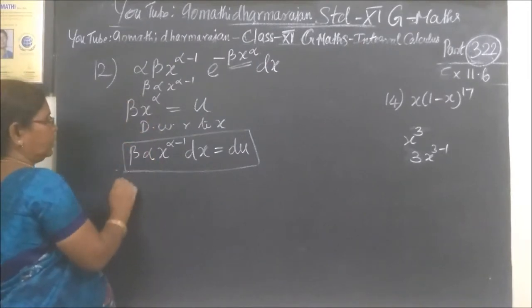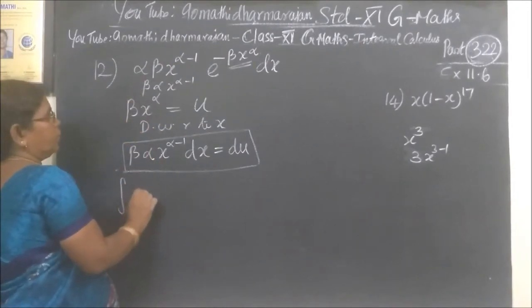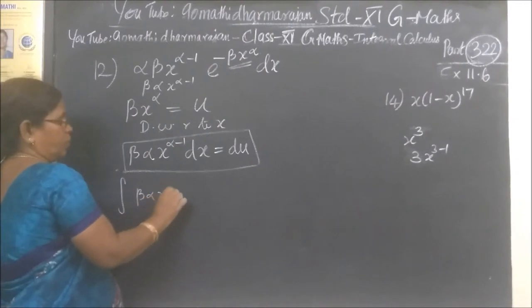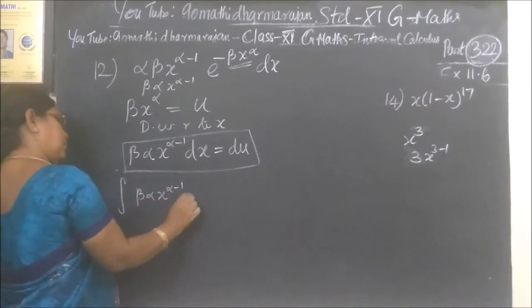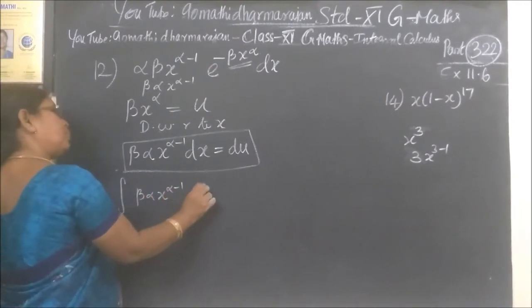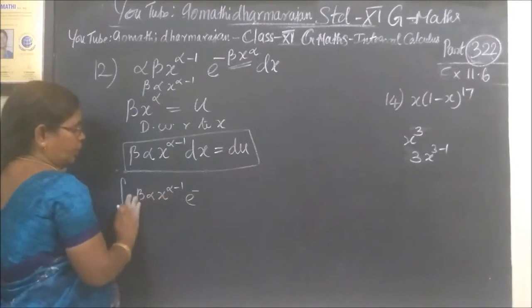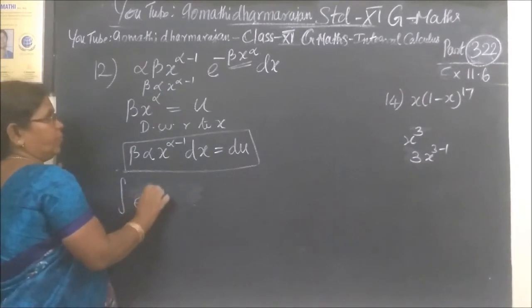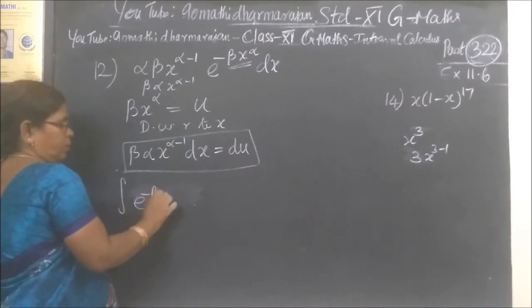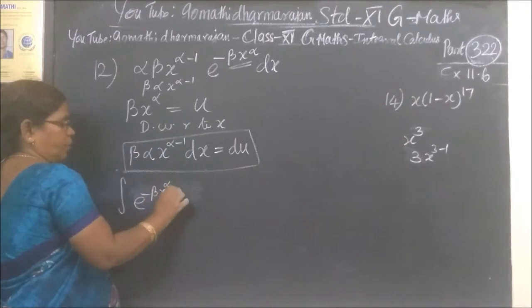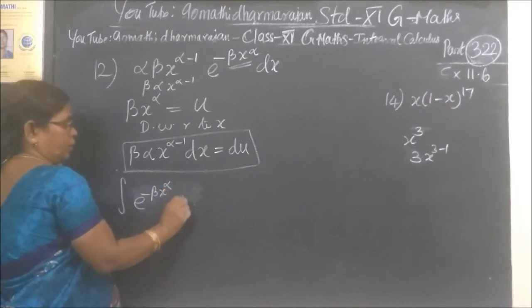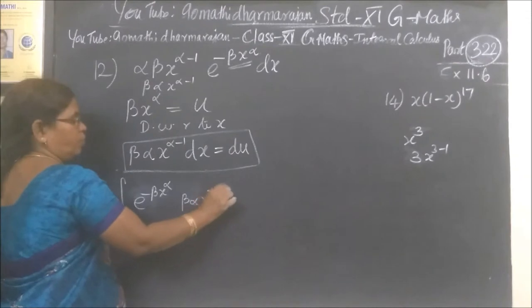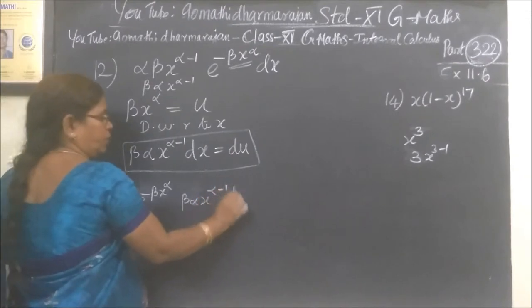Integrate: beta alpha x power alpha minus 1, and this is e power minus beta x power alpha. Then beta alpha x power alpha minus 1 ds.